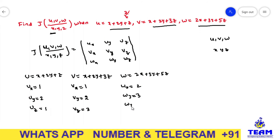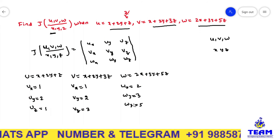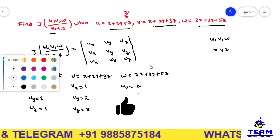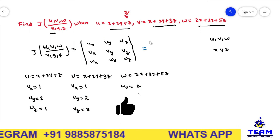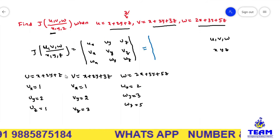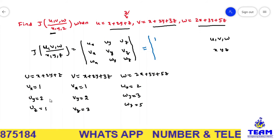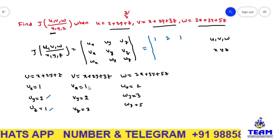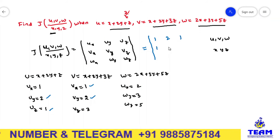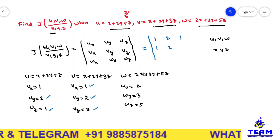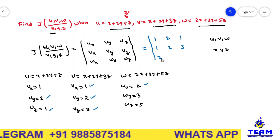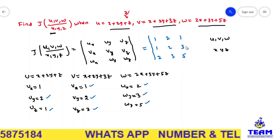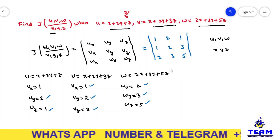I think it is very clear for you. Now we have to substitute all these values in the Jacobian. The Jacobian of u, v, w is the determinant with first row: 1, 2, 1; second row: 1, 2, 3; third row: 2, 3, 5.